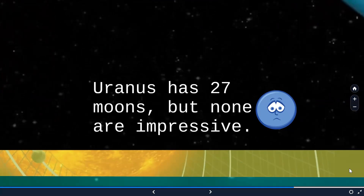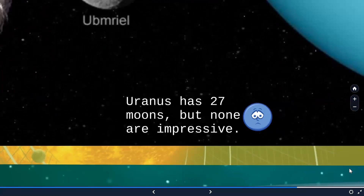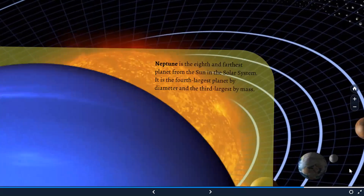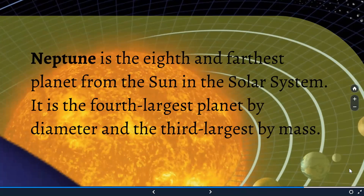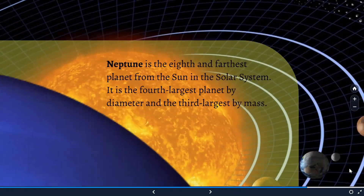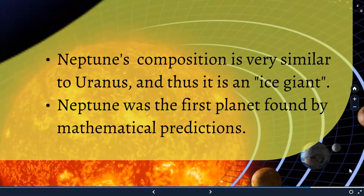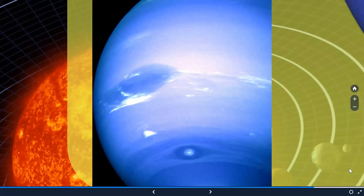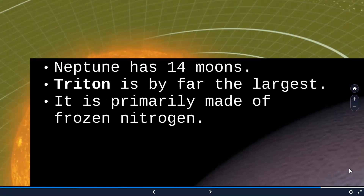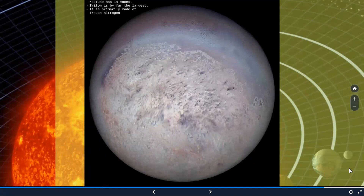The eighth planet is Neptune, the farthest planet from the sun in the solar system. It is the fourth largest planet by diameter and third largest by mass. Neptune's composition is very similar to that of Uranus, so it is also called an ice giant. Neptune was the first planet found by mathematical predictions. It has 14 moons, but Triton is by far the largest and is primarily made of frozen nitrogen.